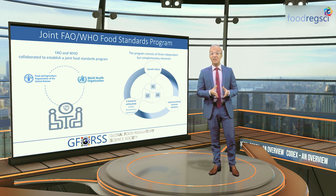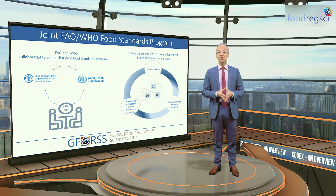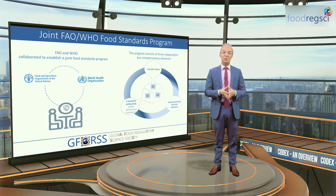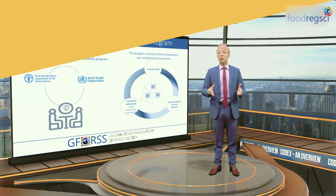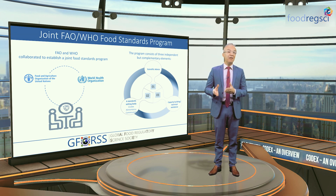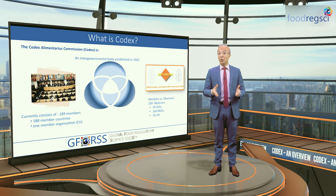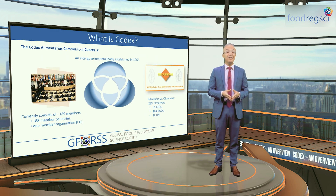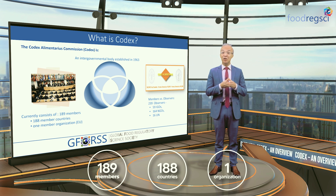The term Codex Alimentarius is used interchangeably to mean the code itself — the set of international standards — or the organization that produces these standards, the Codex Alimentarius Commission. This organization resulted from the joint food standards program of the Food and Agriculture Organization of the United Nations, or FAO, and the World Health Organization, WHO. Codex is a component of this joint program; the other two components are scientific advice and capacity building for developing countries. Codex held its first meeting in 1963 and now includes 189 members: 188 member countries and one member organization, the European Union.